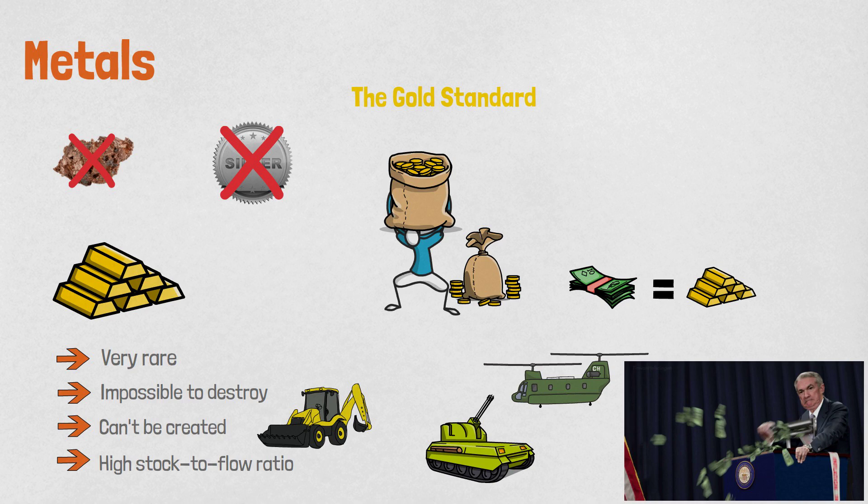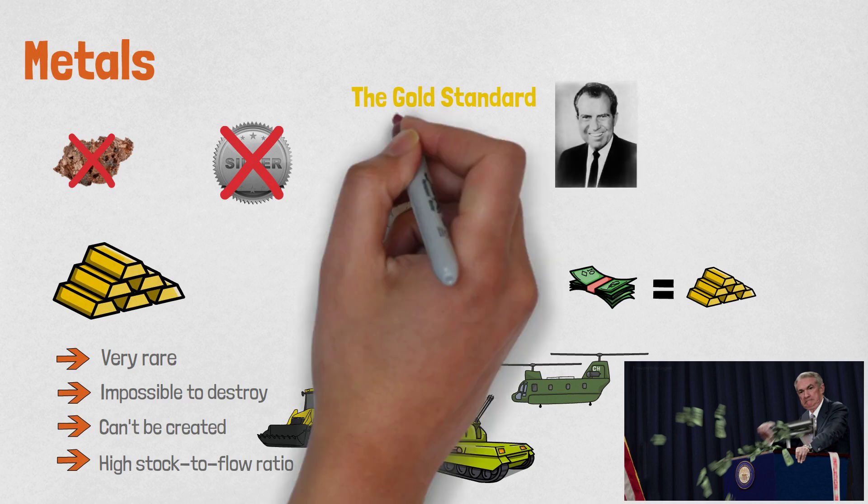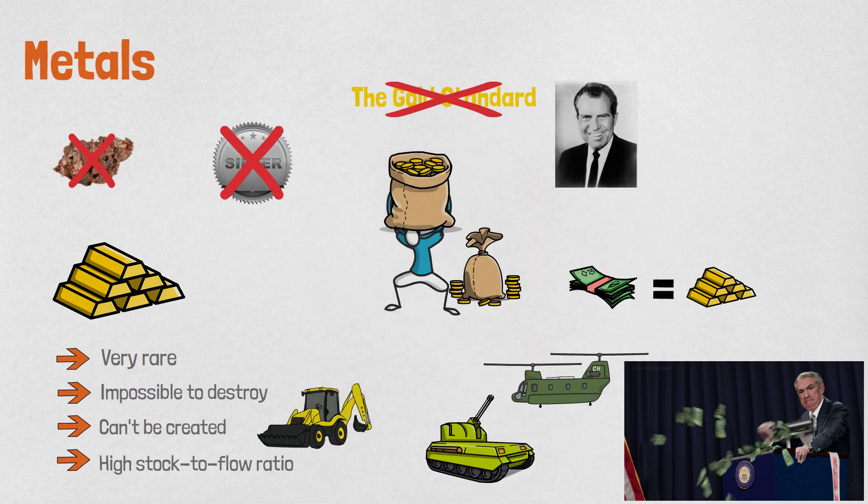Eventually, in 1971, Richard Nixon ended the gold standard and since then our economy isn't backed by anything than trust in the government.